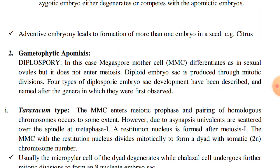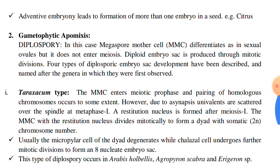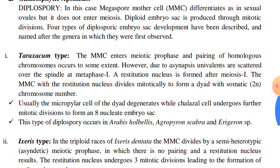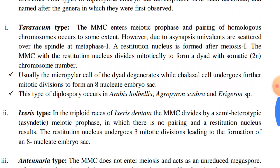By the process of mitotic divisions it forms a diploid embryo sac. There are four types of diplosporic embryo sac development, which have been named according to the genera from where they were first observed. Number one, the Taraxacum type.